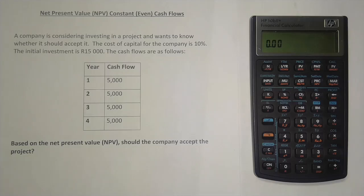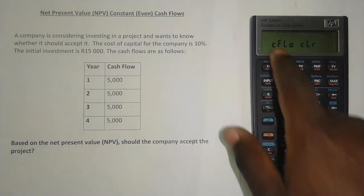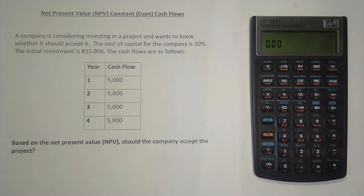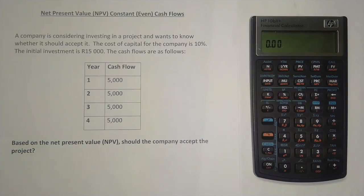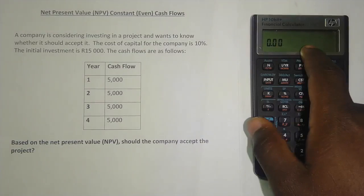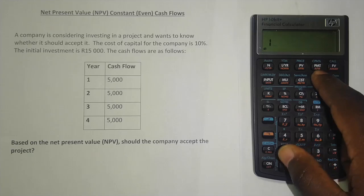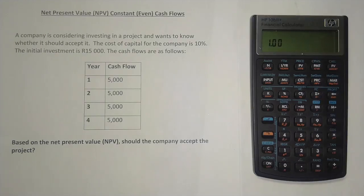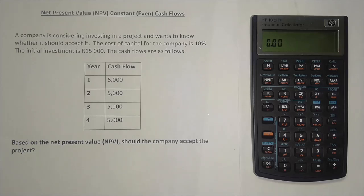Let me show you the first way. Before we start, make sure we clear our cash flow memory — press the blue button, then press C, then press zero, and you can see 'cash flow clear.' Also, by default this calculator is compounded 12 times per year, so we need to change that to one time per year. Press the orange button and press C to confirm it shows 12. Then press 1, then the orange button, then PMT — where it says P/YR underneath — to set it to 1 per year.